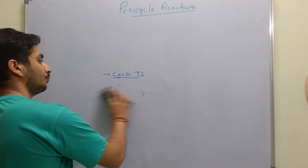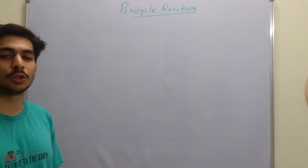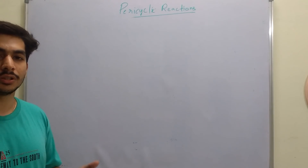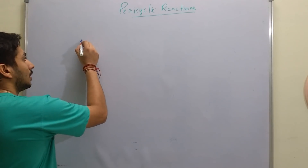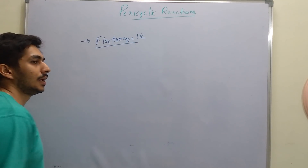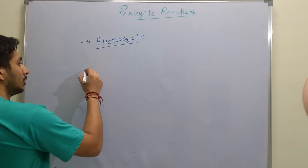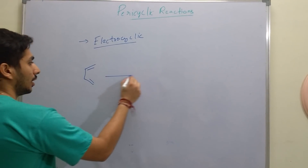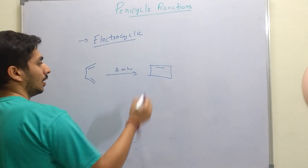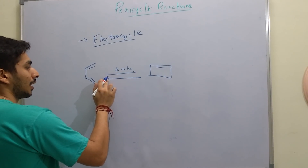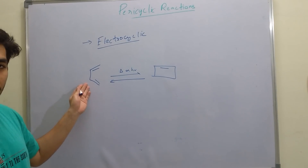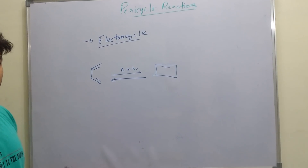Now let's begin with pericyclic reactions. The main concept is that determining the stereoselectivity of the reaction is important. There are three major categories. The first is electrocyclic reactions, which are basically ring-opening or ring-closing reactions. For example, 1,3-butadiene in the presence of heat or light is converted to cyclobutene, and the reverse process is also possible. It's a reversible reaction.